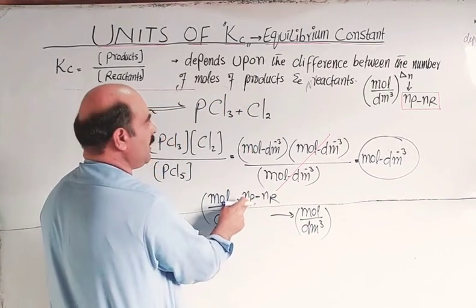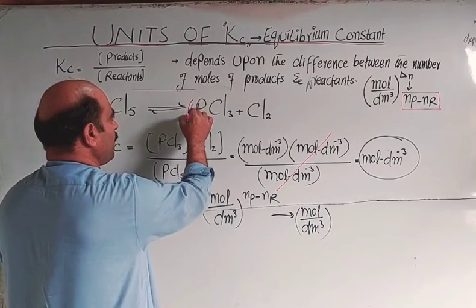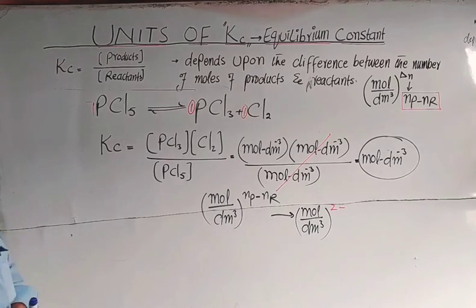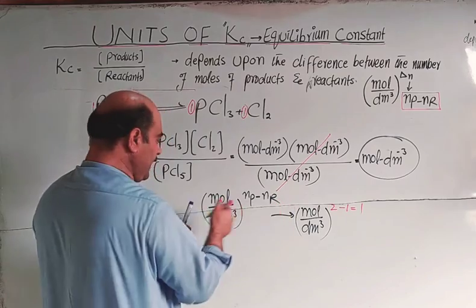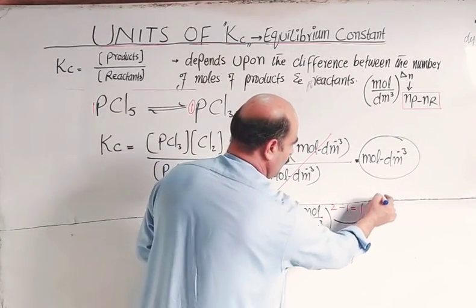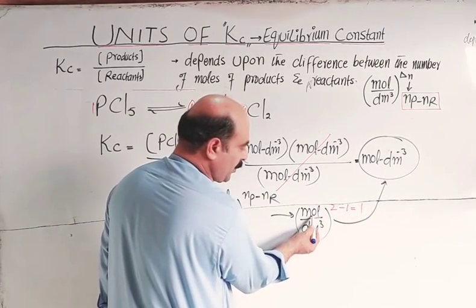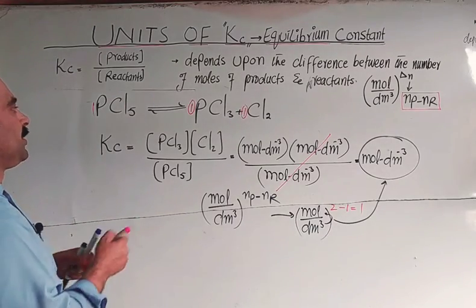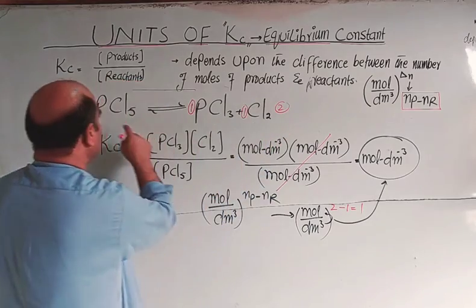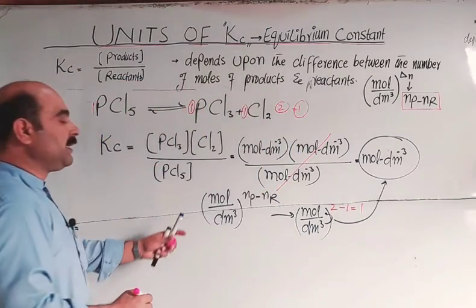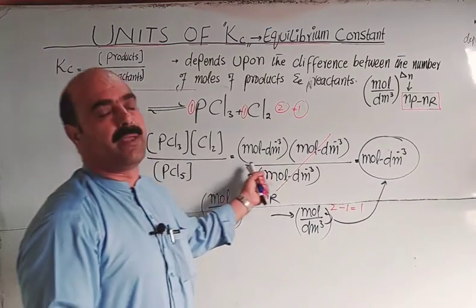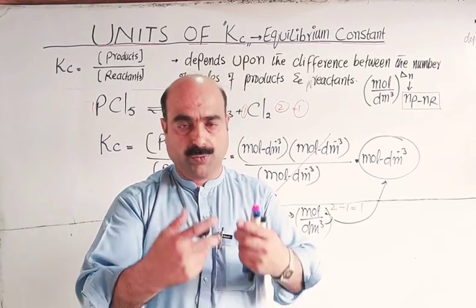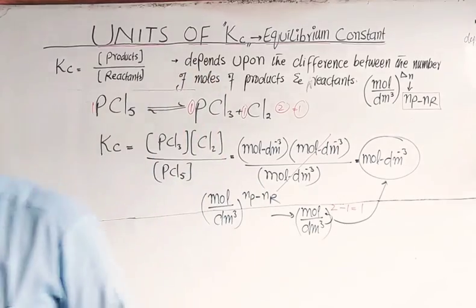Using the trick: number of moles of products is one mole PCl₃ plus one mole Cl₂ equals two. Number of moles of reactants is one (PCl₅). Delta n = 2 minus 1 = 1. So unit = mole per dm³ to the power one = mol dm⁻³. The unit of Kc depends on the total number of moles of products and reactants. Thanks for watching.